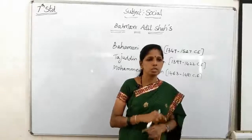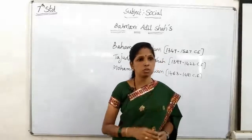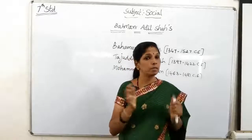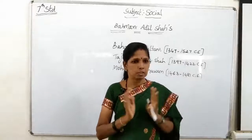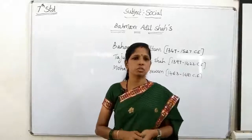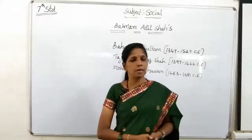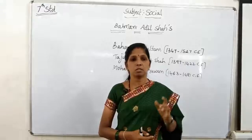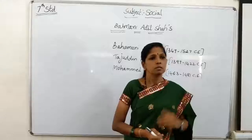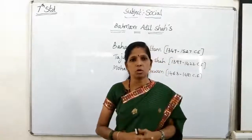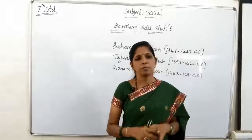Tajuddin Feroz Shah was a writer who encouraged all languages and was also an expert in geometry and theology. He sheltered many philosophers, poets, and artists, honouring them. He established an observatory in Daulatabad, which is in present-day Maharashtra. He also propagated the beauty of his capital Kalburgi and built a new city called Ferozabad on the bank of the Bhima river.